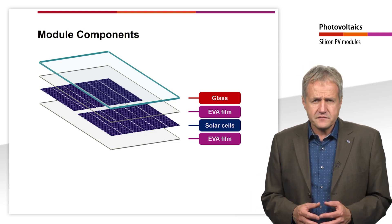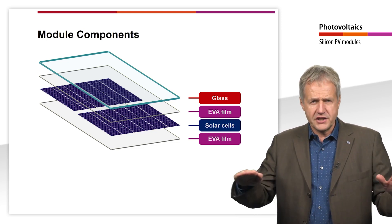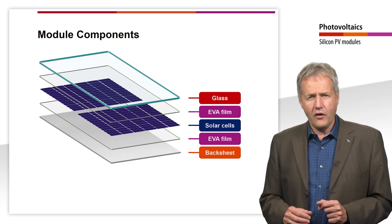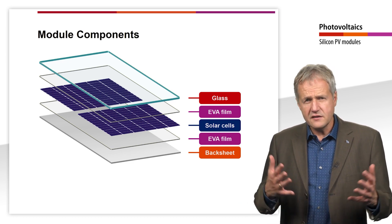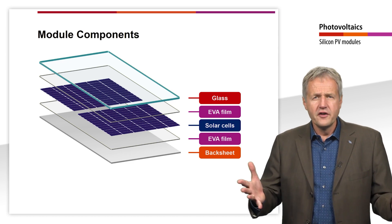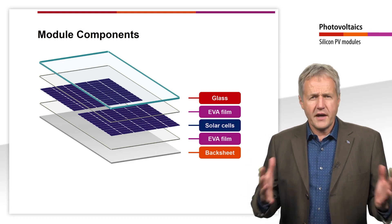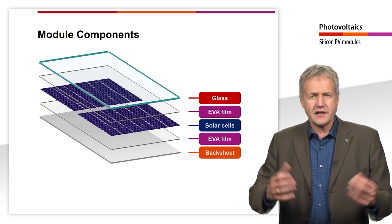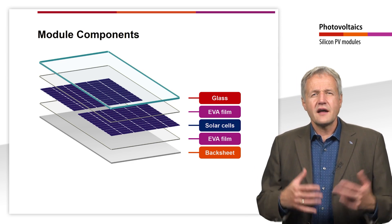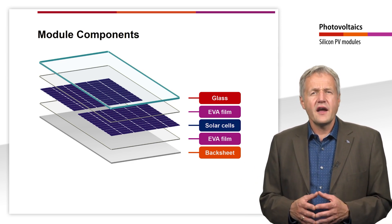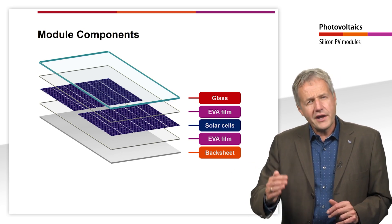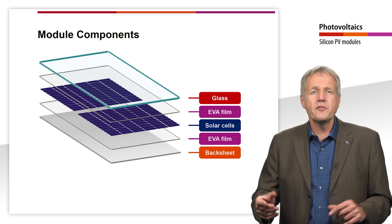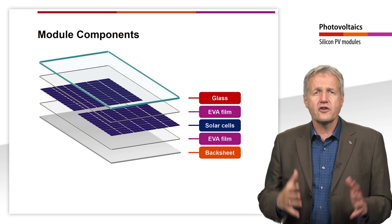On the rear side of the cell, the module ends with a backsheet film. This film provides additional protection against moisture and insulates the back of the module. In single-sided modules, a compound film is usually used as backsheet. These films are usually white and are highly reflective. Thus, they additionally serve as a diffuse backside reflector, allowing photon recycling of light not absorbed by the solar cell with the help of total internal reflection at the front cover glass.